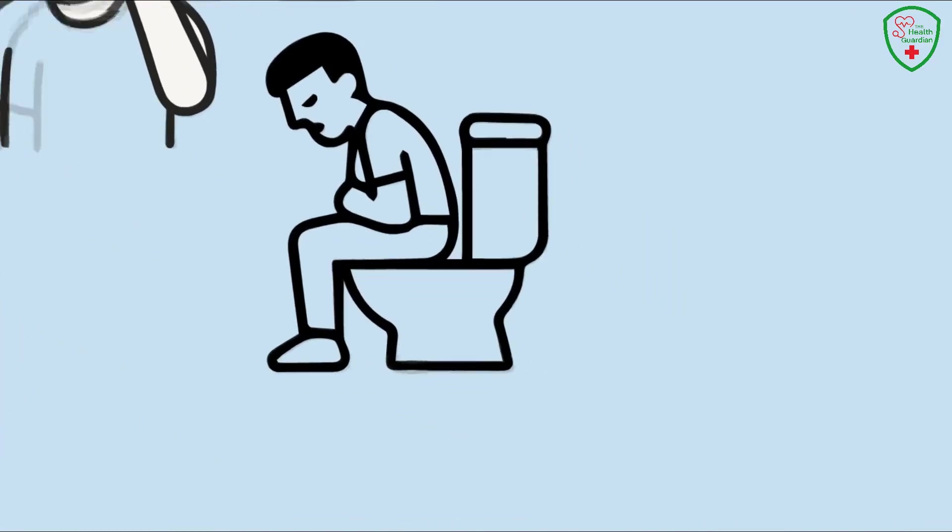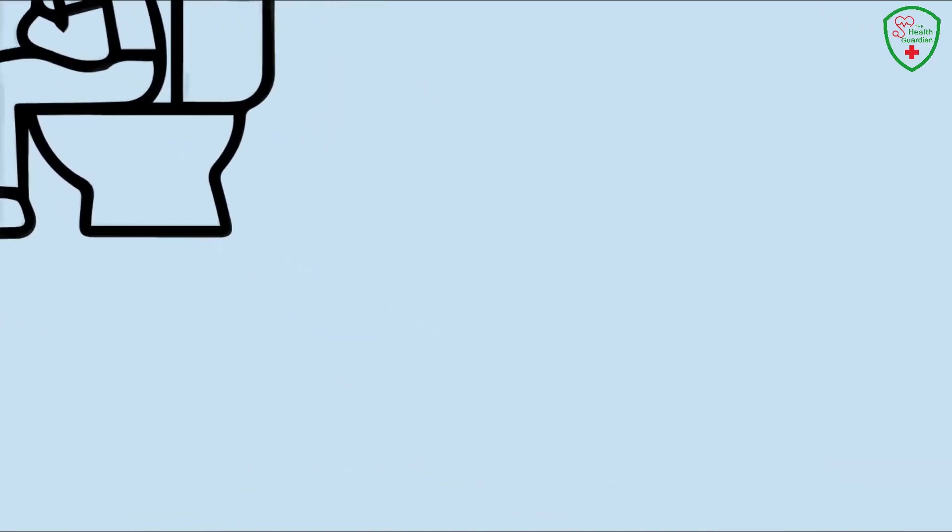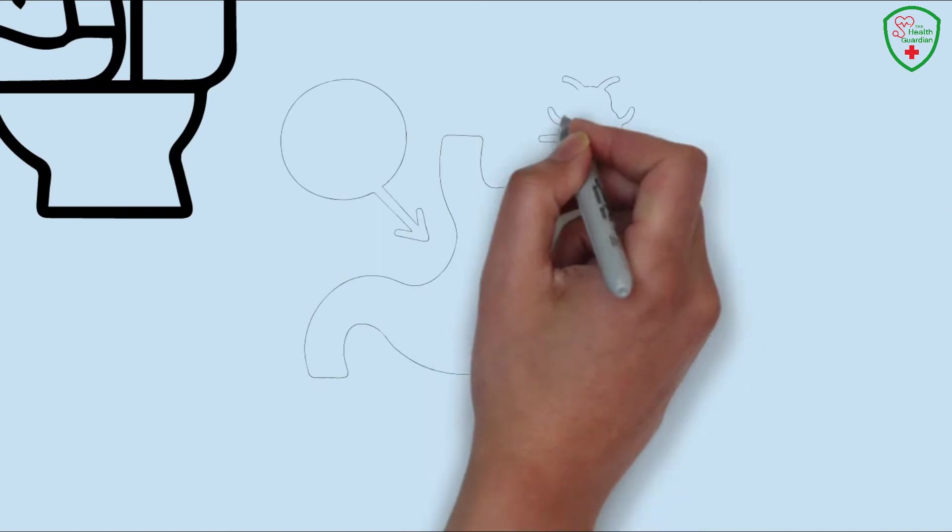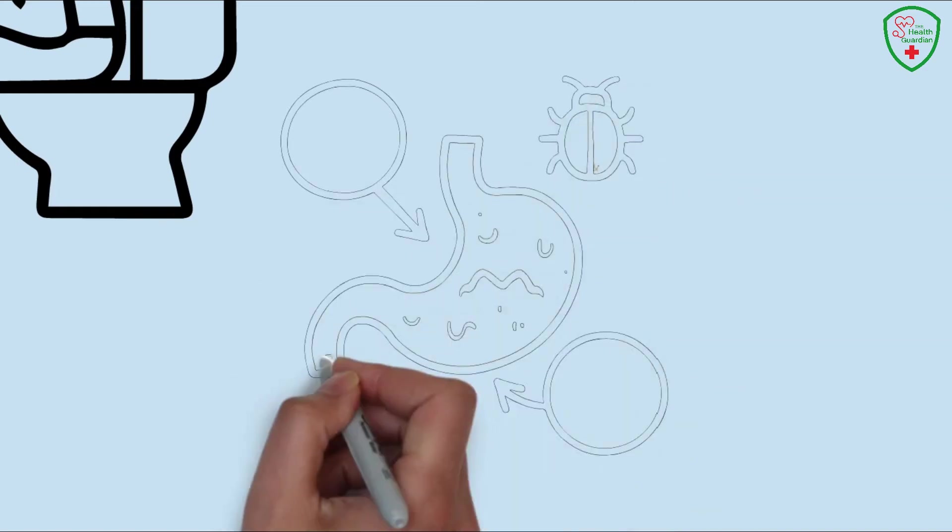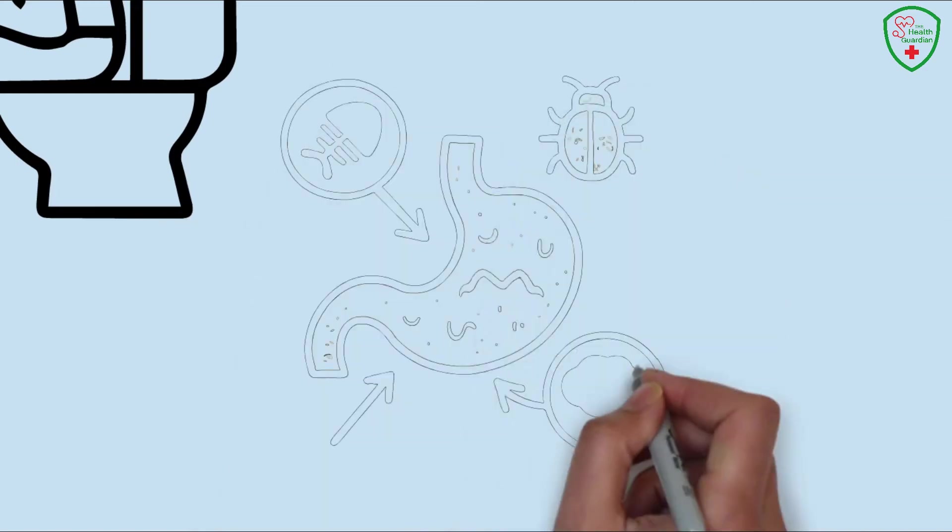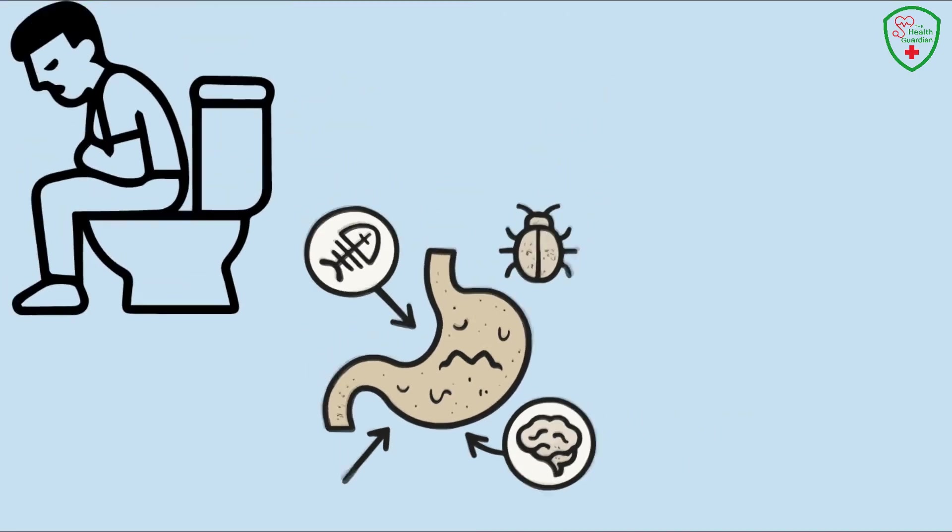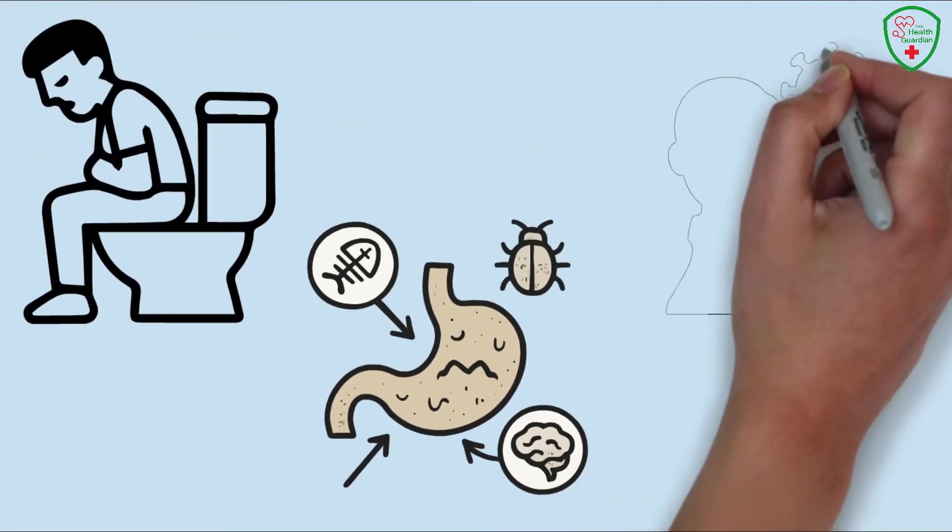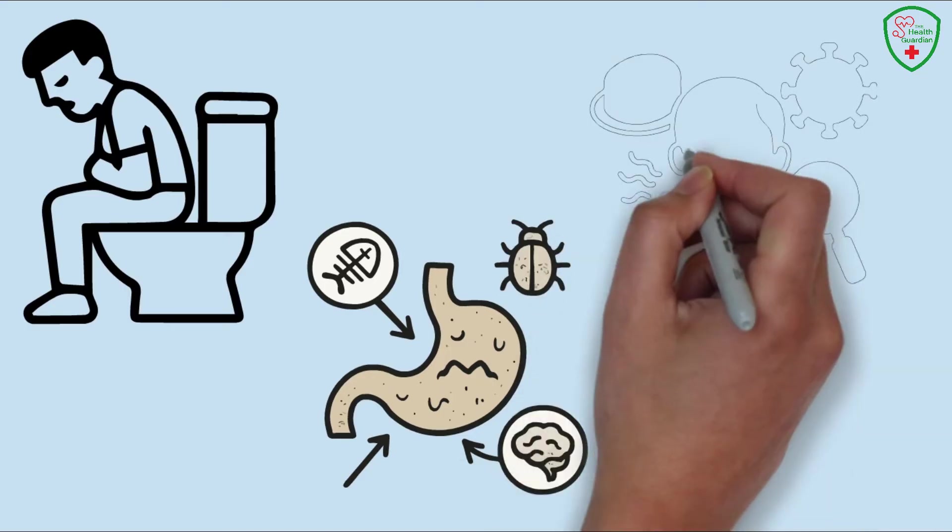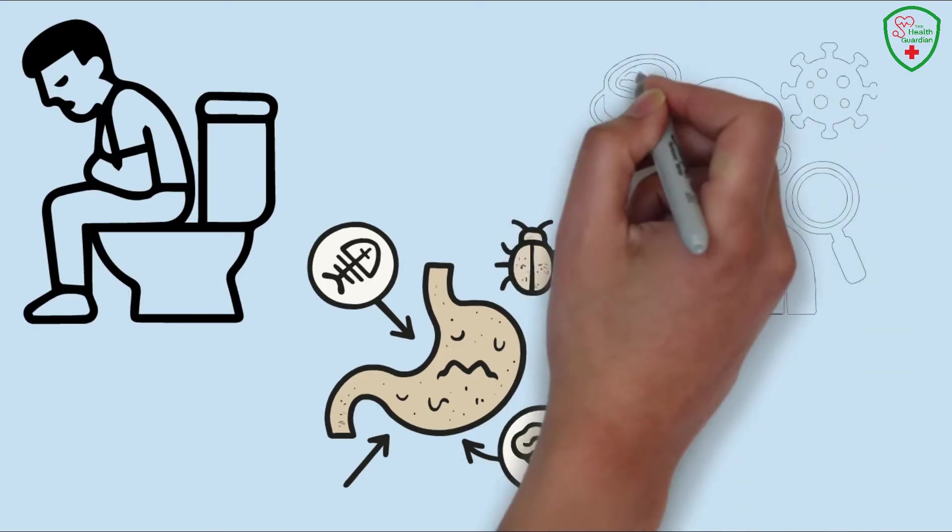What's tough about these digestive symptoms is they can mimic other issues like food poisoning, a stomach bug, or even stress-related IBS, whether it's KP.2, KP.3, or another strain. You might think, oh, I just ate some bad sushi, but it could be COVID. That's why getting tested is crucial. It's like solving a mystery with your health as the prize.